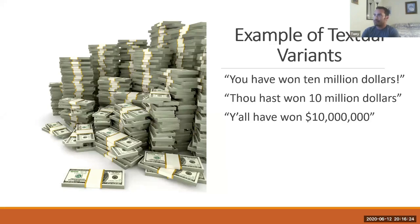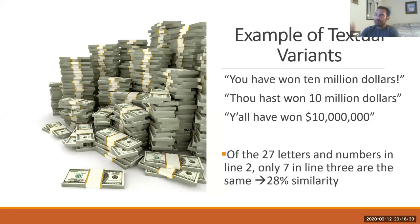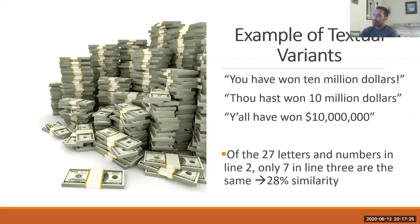Here's another example of textual variance: 'You have won 10 million dollars,' 'Thou hast won 10 million dollars,' 'Y'all have won 10 million dollars.' Of the 27 letters and numbers in line two, only seven in line three are the same — just 28% similarity — and yet the meaning is exactly the same. One is more casual, one is archaic, one is modern, but the meaning is still the same.